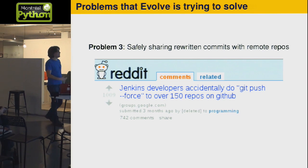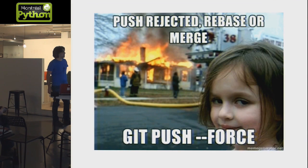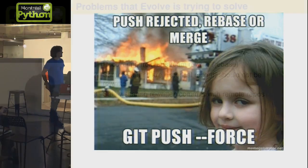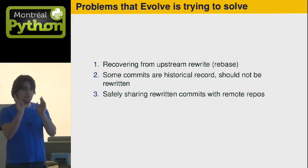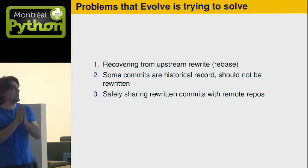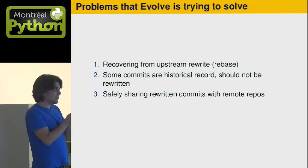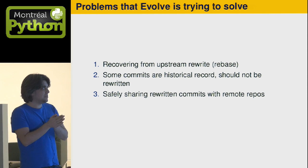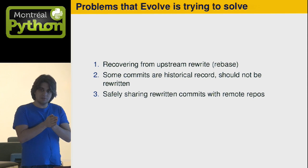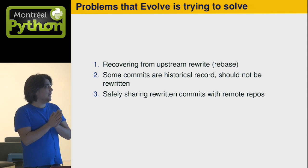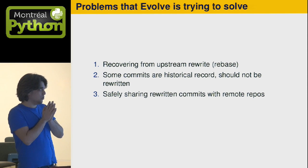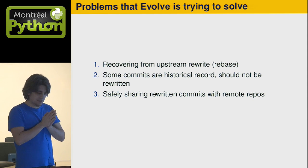Eventually they got almost all of it correct. There were a few small repos they didn't care very much about, and they were never quite sure where the commits were on those last repos. And when this happens, well, Reddit makes fun of you. So again, the three problems are: recovering from an upstream rewrite, some commits should not be rewritten, and you want to safely share commits with each other.